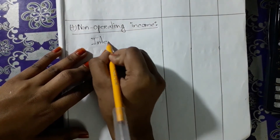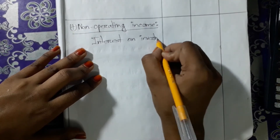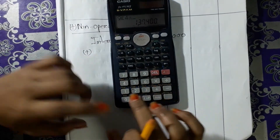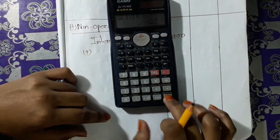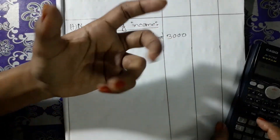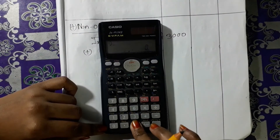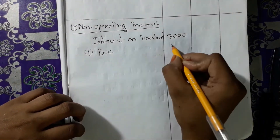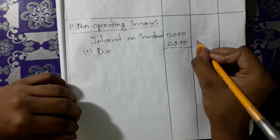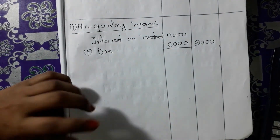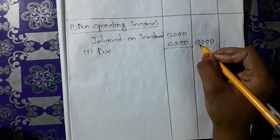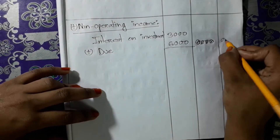Interest on investment: we have to calculate because there is a $90,000 investment at 10%, so 10% is $9,000. We have already recorded $3,000, but the full amount is $9,000, so $9,000 minus $3,000 means we still need to record $6,000.